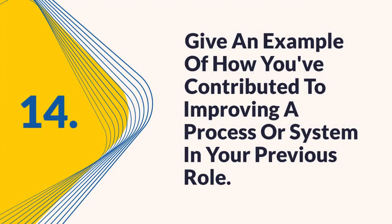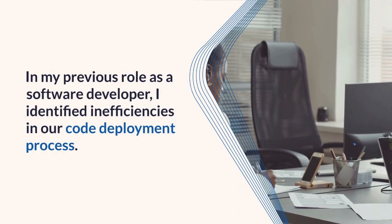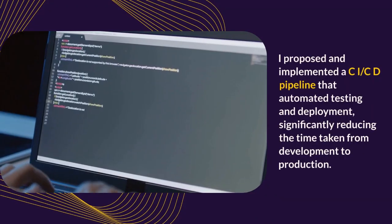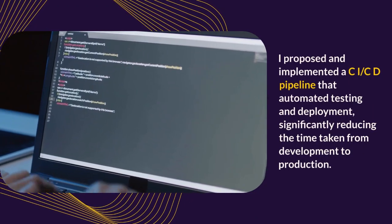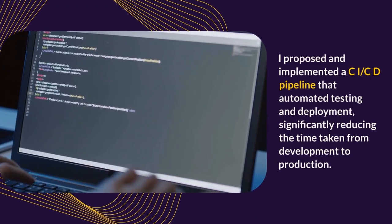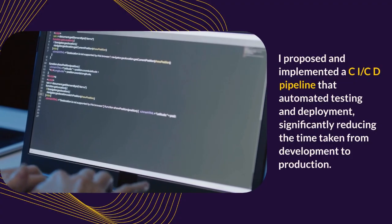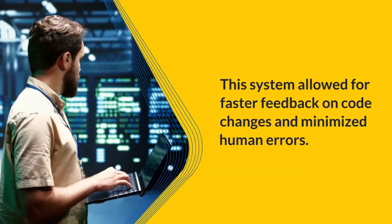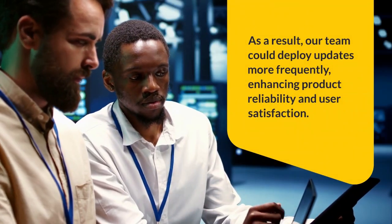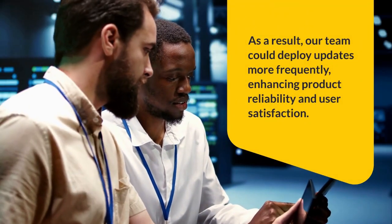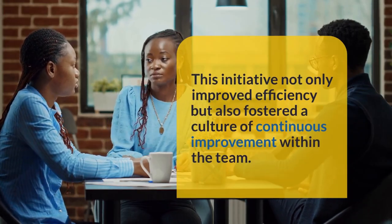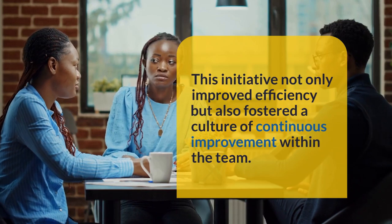Question 14: Give an example of how you've contributed to improving a process or system in your previous role. As a software developer, I identified inefficiencies in our code deployment process. I proposed and implemented a CI/CD pipeline that automated testing and deployment, significantly reducing time from development to production. This system allowed for faster feedback on code changes and minimized human errors. As a result, our team could deploy updates more frequently, enhancing product reliability and user satisfaction, and fostering a culture of continuous improvement.